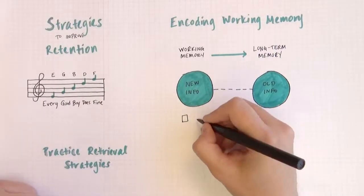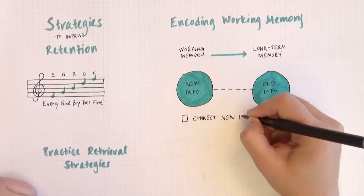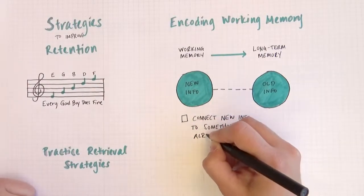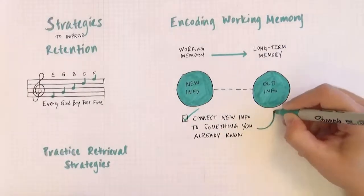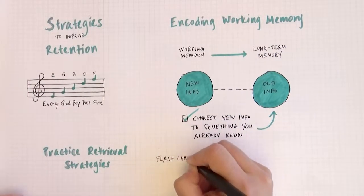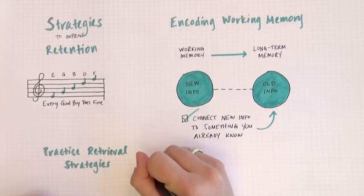Real learning depends on being able to retrieve information from long-term memory when it's needed. You have to practice retrieval strategies so that information can be easily pulled back and forth between long-term and working memory. You can use self-testing or reflection to exercise your retrieval muscles.